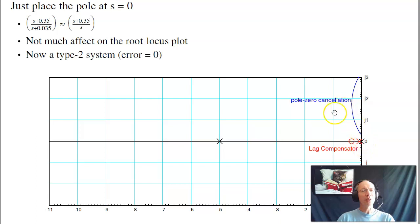If instead of putting the pole at 0.03, I put it at zero, that's not going to affect the root locus that much. It's not going to affect the gain versus frequency that much. But what I have done is I now have a type 2 system. A type 2 system has no error per ramp input.